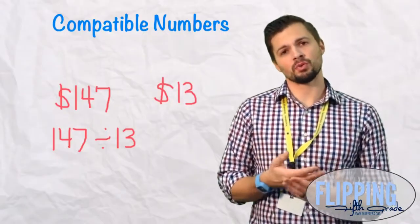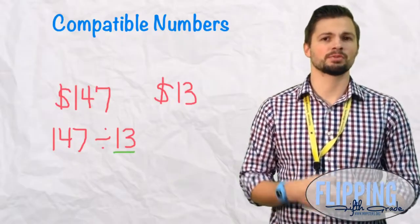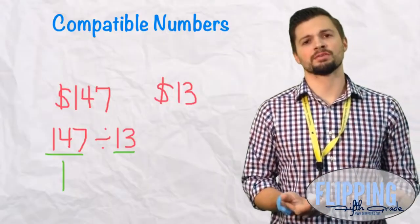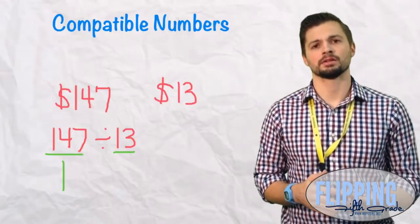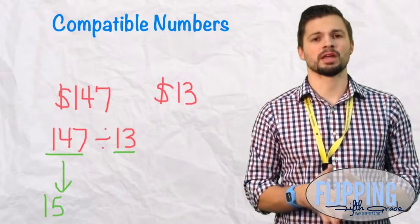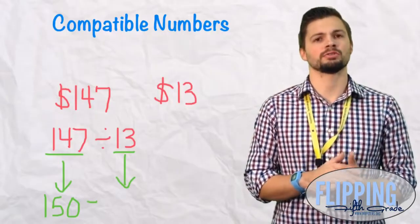Last time I told you you don't want to touch the divisor. Unfortunately this time with the number 13, we're going to have to change that divisor. So $147, we're immediately going to round that to $150. It's an easy number to work with, and then we have to look at our divisor and say, what is a number compatible with 150?